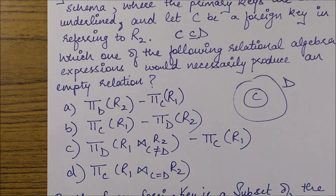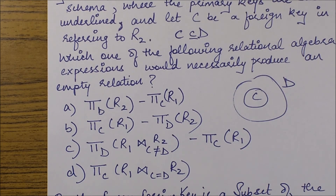The same question appeared with a minor change in GATE 2012, where two binary relational schemas were given — slightly simpler, but it came as a two-mark question, which matters a lot in GATE. Please examine the question carefully. Feel free to post any doubts in the comments, like the video if you found it helpful, and stay tuned for more relational algebra questions in upcoming videos.